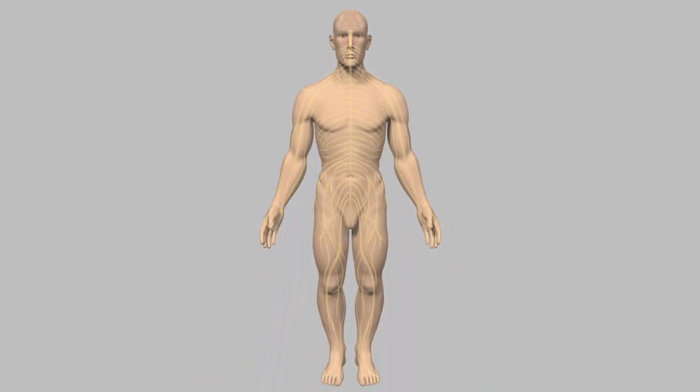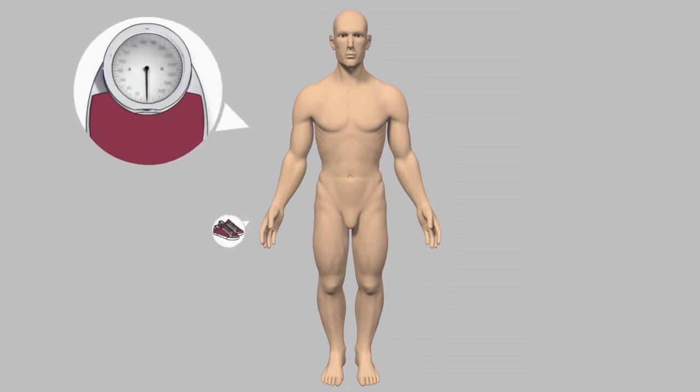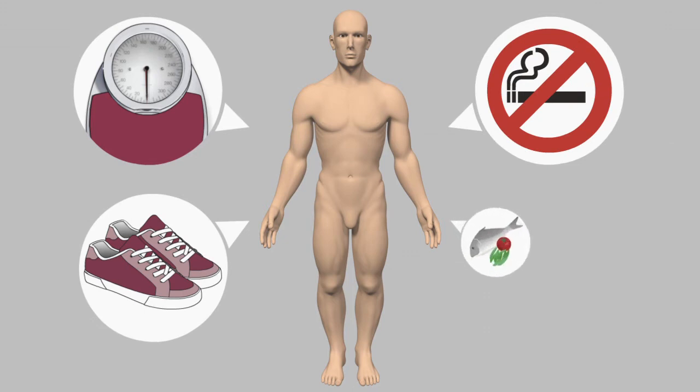Unlike type 1 diabetes, it is possible to prevent by adopting a healthier lifestyle, watching one's weight, exercising, giving up smoking and eating healthily, in particular reducing the intake of sugar and saturated fats.